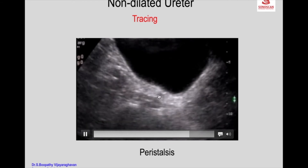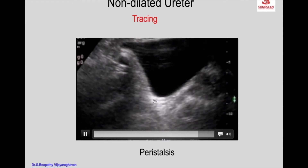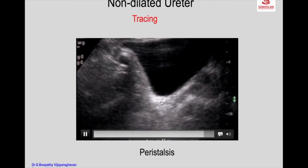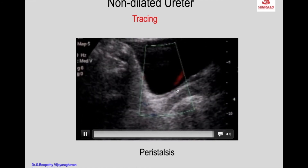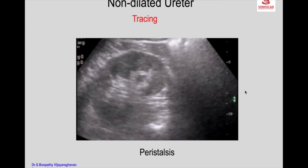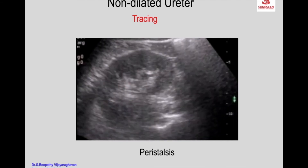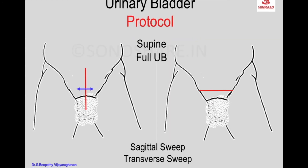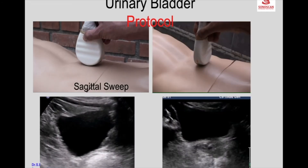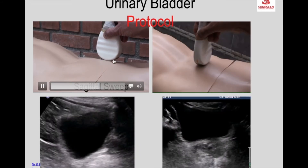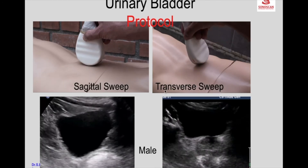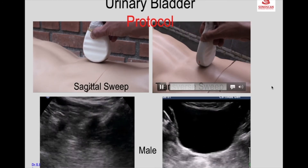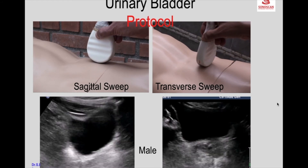This helps us to identify and confirm that it is the ureter. You see the distal most ureter collapsing, and then you can put on color to see the jet which follows the collapsing of the distal most ureter. Then rotate 90 degrees, make a transverse scan, and perform an up-and-down transverse sweep so that you scan the entire volume of the bladder. That is the sagittal sweep in the suprapubic region, and the corresponding transverse sweep can be seen in a male patient.